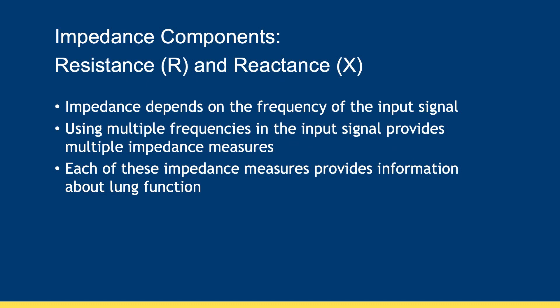Respiratory system impedance has two components — resistance and reactance — which are measured at multiple frequencies simultaneously. This is important because respiratory system impedance in the lung varies by the frequency at which it is measured. In the clinical setting, measures are usually taken within a frequency range from 5 to 40 hertz, which is higher than the frequency of normal breathing to avoid interference between the breathing rate and measurement frequency.